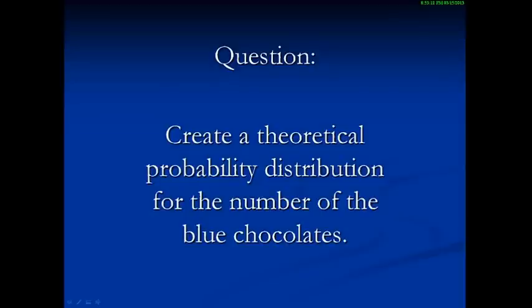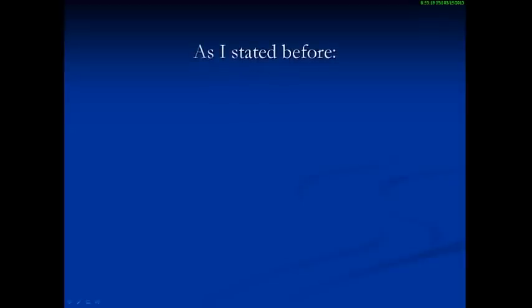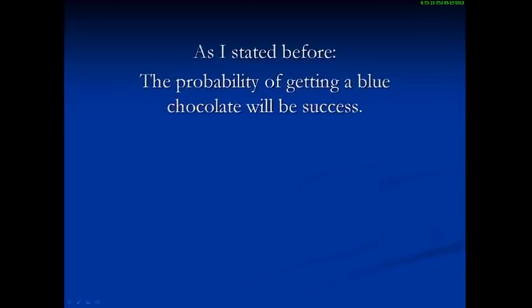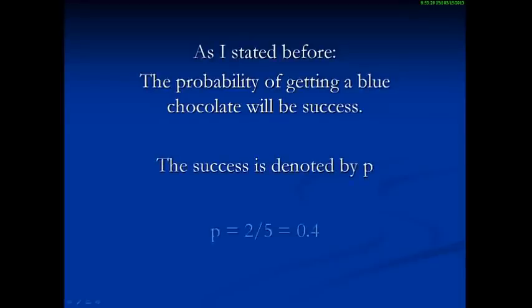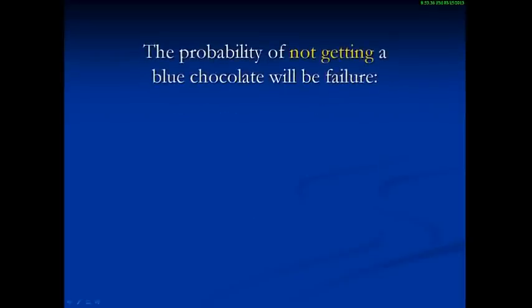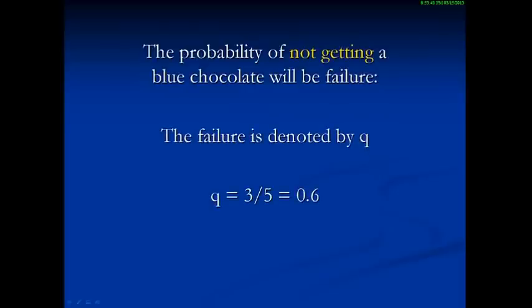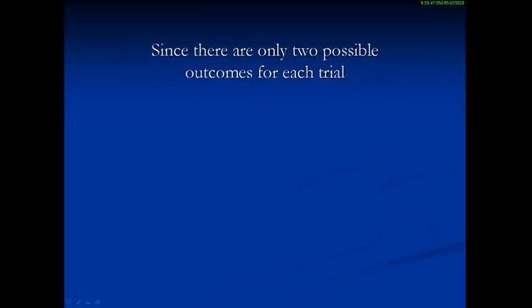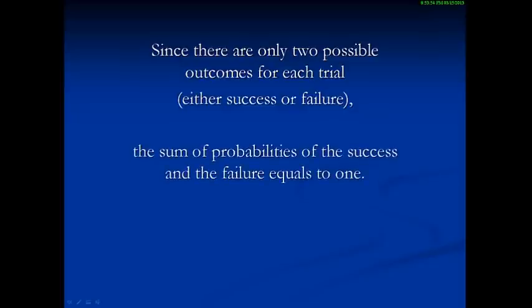Question: create a theoretical probability distribution for the number of blue chocolates. As stated before, the probability of getting a blue chocolate is a success, denoted by P. P equals two over five equals 0.4. The probability of not getting a blue chocolate is a failure, denoted by Q. Q equals three over five equals 0.6. Since there are only two possible outcomes for each trial — either success or failure — the sum of probabilities equals one: P plus Q equals one.